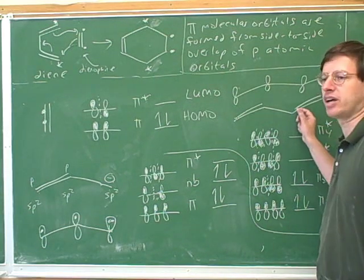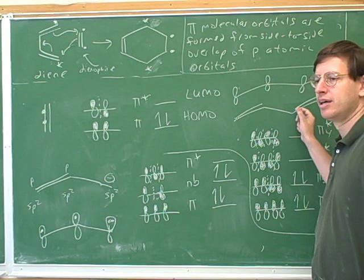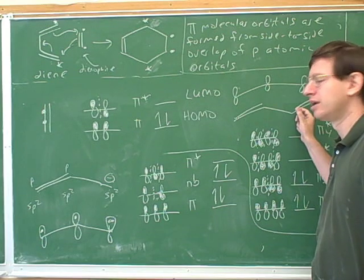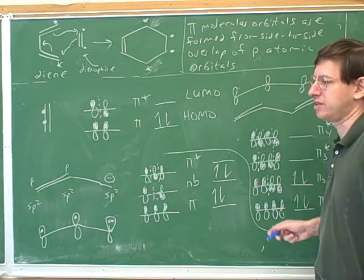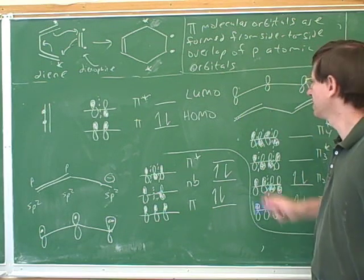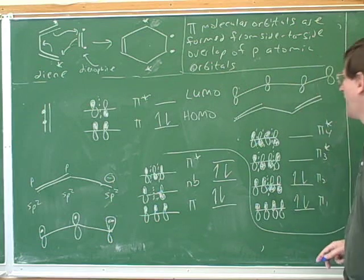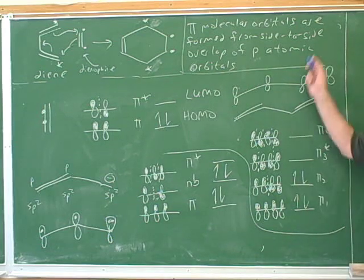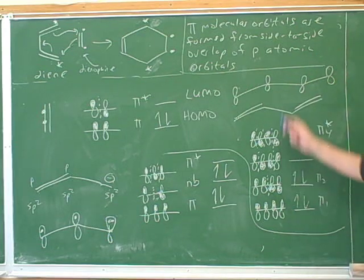You guys figured out the hybridization of these carbons. They're all sp2, so do they have p orbitals? Yeah, they all have p orbitals. How many p orbitals total? Four. So how many pi molecular orbitals? Four.